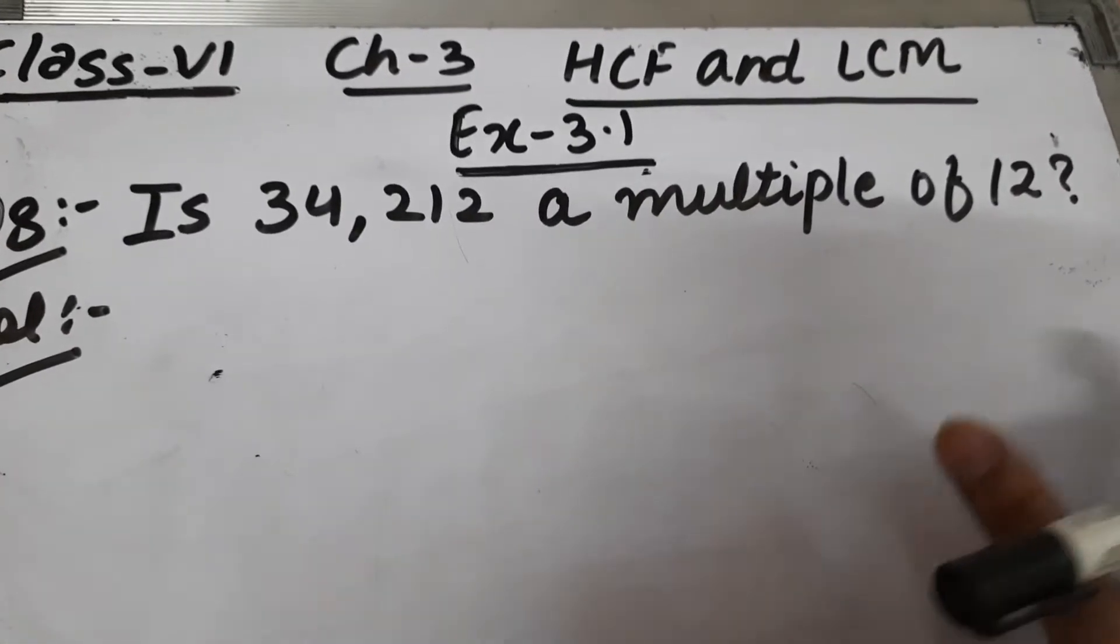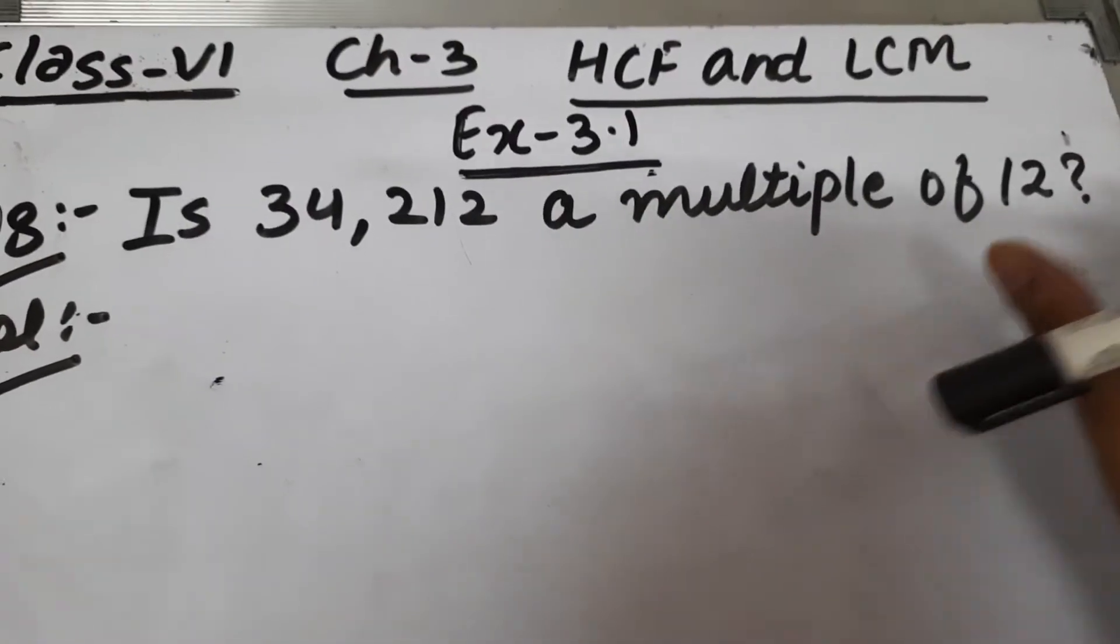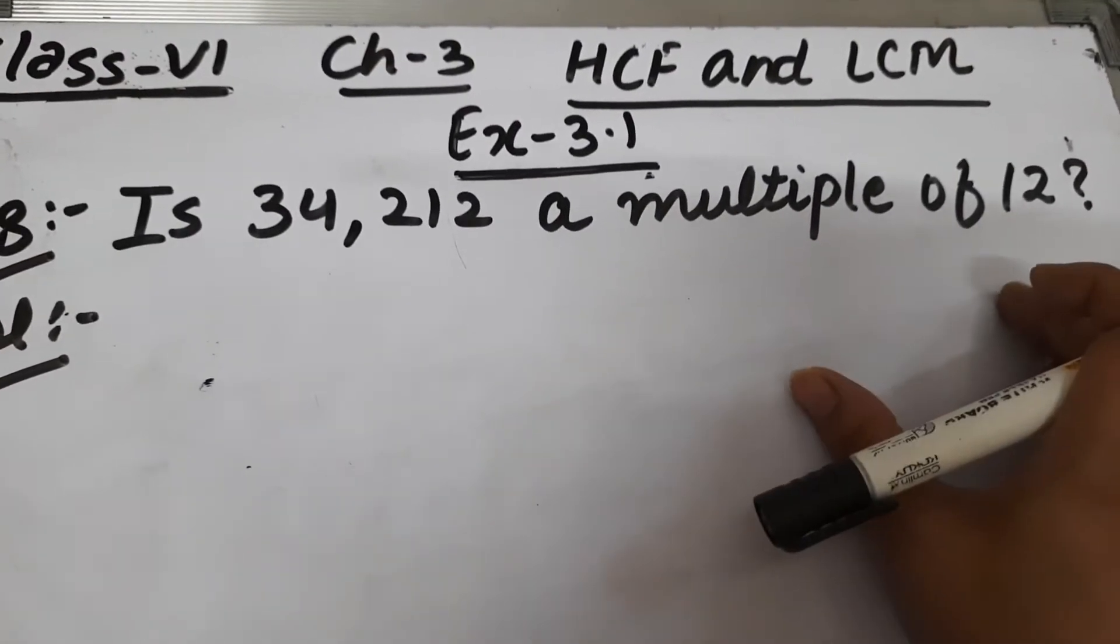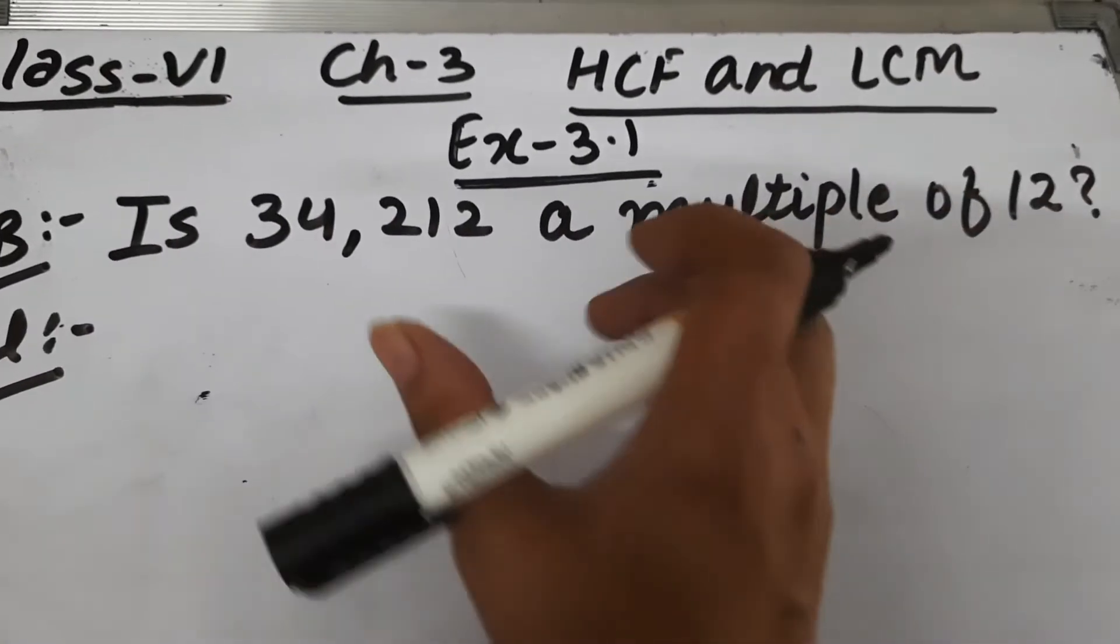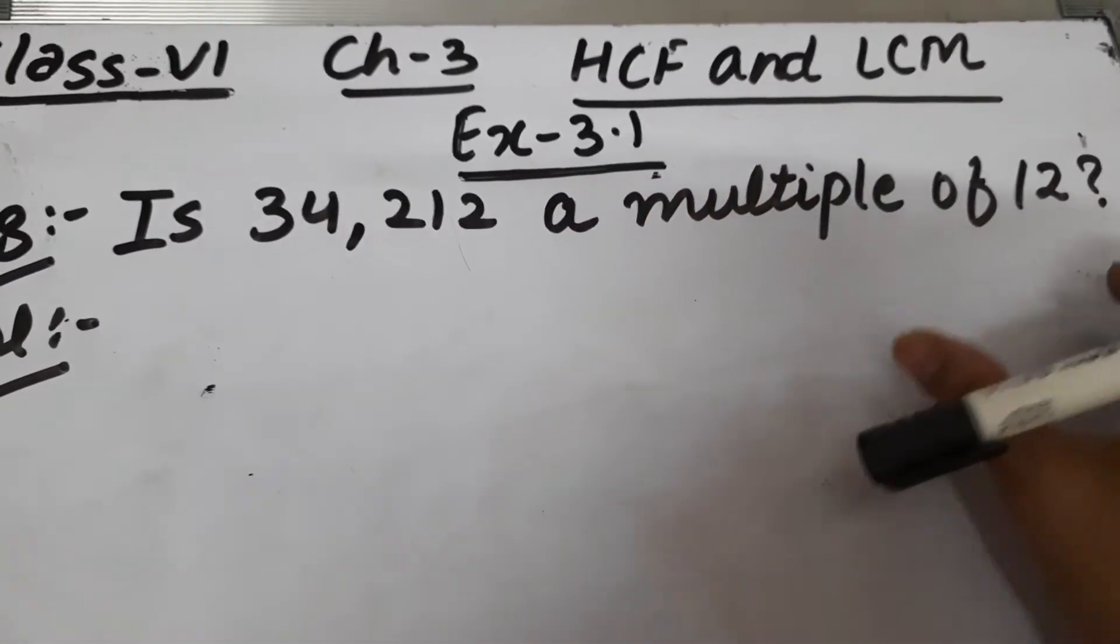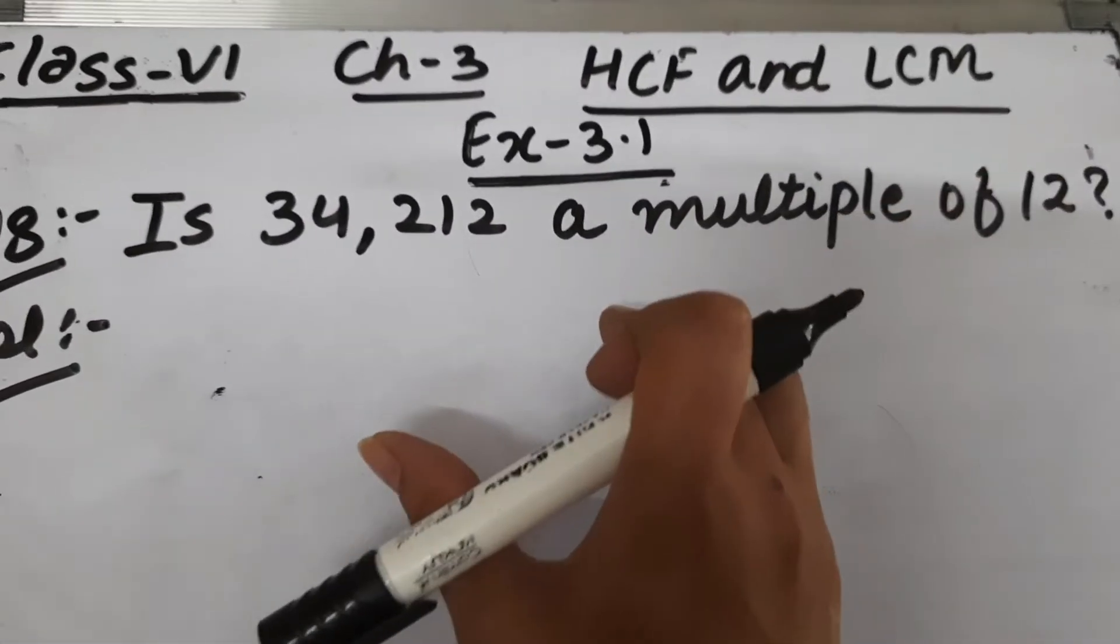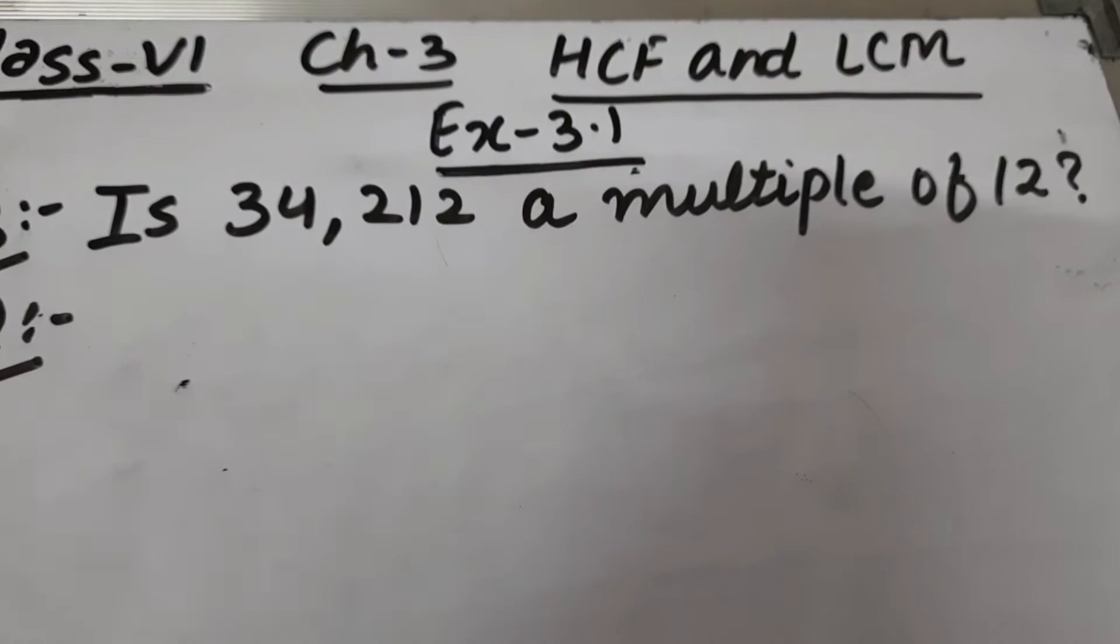How will we check? We will divide 34,212 by 12. If the remainder comes out to be 0, that means 34,212 is a multiple of 12. And if the remainder is not 0, that means 34,212 is not a multiple of 12.